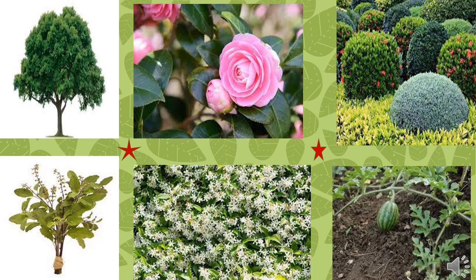Let's see some examples. The first one is a tree. The second one is a rose plant, which is a shrub. The third one is a bush. The fourth one is tulsi, which is a herb. The fifth one is jasmine, which is a climber. The last one is watermelon, which is a creeper.